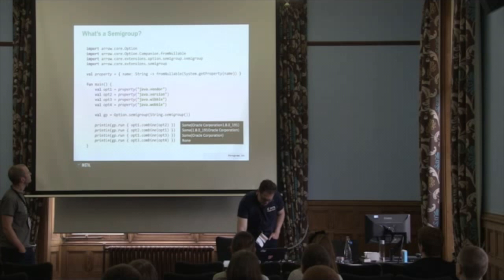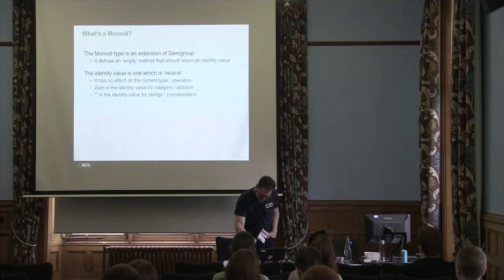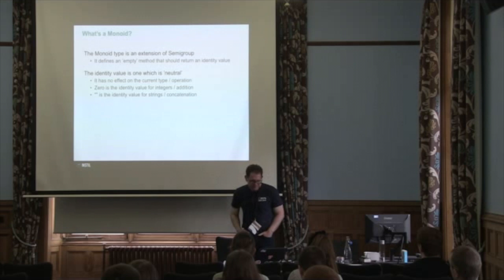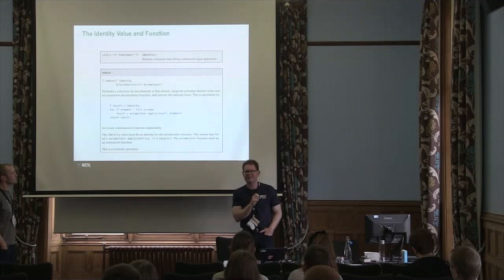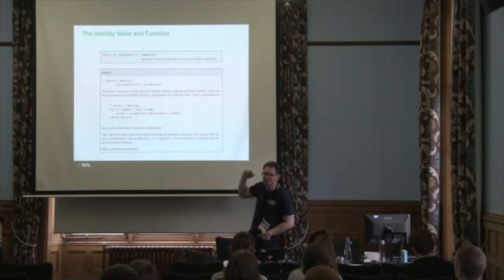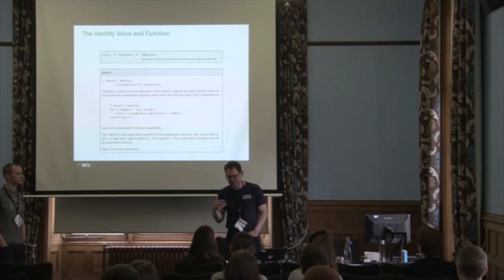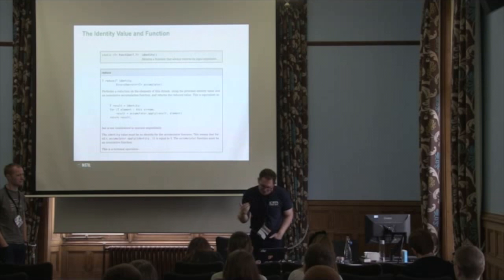Then a semigroup — that's just where you have two values and you want to be able to combine them; the main operation is combine. Then getting to ones you may have heard of: what's a monoid? A monoid is just semigroup plus-plus — it has an empty method that returns an identity value. The identity value is something valid but that doesn't change the operation: for addition it's zero, for multiplication it's one, for concatenation it's the empty string. With a monoid, you have an empty method which gives you back the identity value.